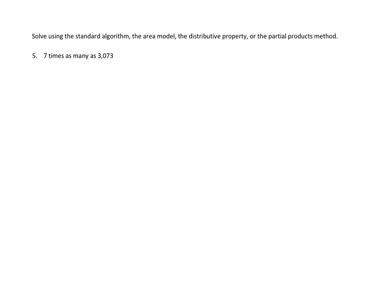I'm going to choose the partial products method because I think it's the middle one in terms of difficulty. The area model is one visual way of doing it. Obviously, the standard algorithm is the fastest way, but maybe the most difficult intellectually. So I'm going to try the one that's kind of in between, which is the partial products method. Seven times as many as 3,073. So 3,073 times seven using partial products method.